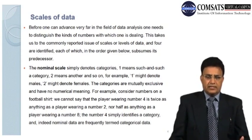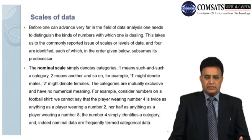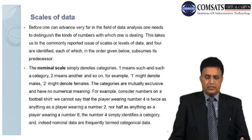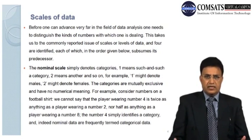Number one, the nominal scale simply denotes categories. One means such and such a category, two means another, and so on. For example, one might denote males, two might denote females. The categories are mutually exclusive and have no numerical meaning. Consider numbers on a football shirt: we cannot say that the player wearing number four is twice as anything as a player wearing number two, nor half as anything as a player wearing number eight. The number four simply identifies a category, and nominal data are frequently termed categorical data.